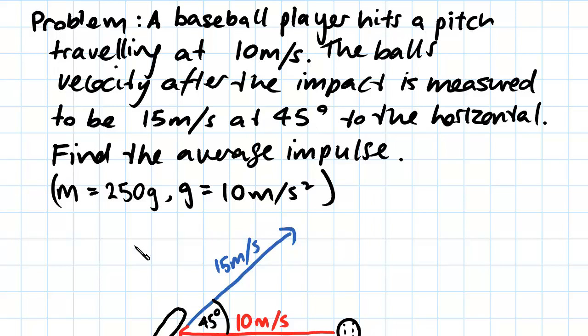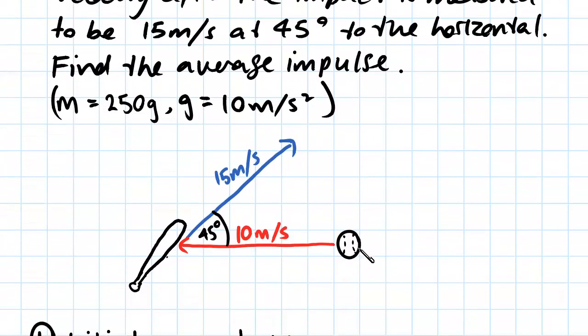We've also been told the mass of the baseball is 250 grams and the acceleration due to gravity is 10 meters per second squared. So that is the diagram here. We have the ball coming in at the horizontal here.